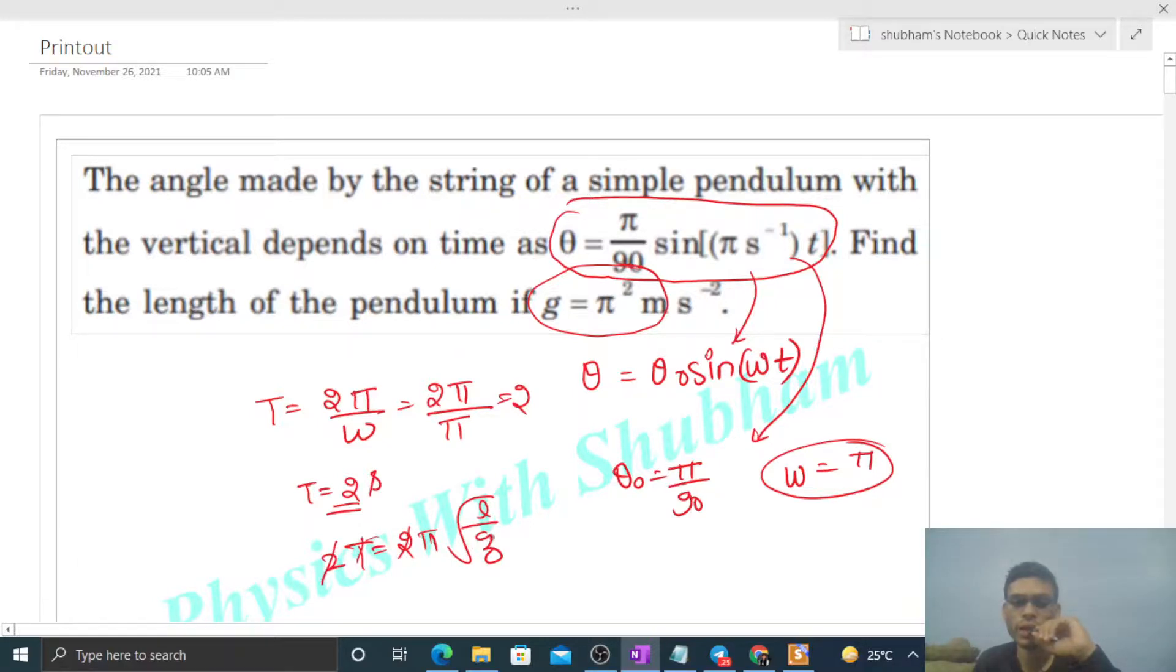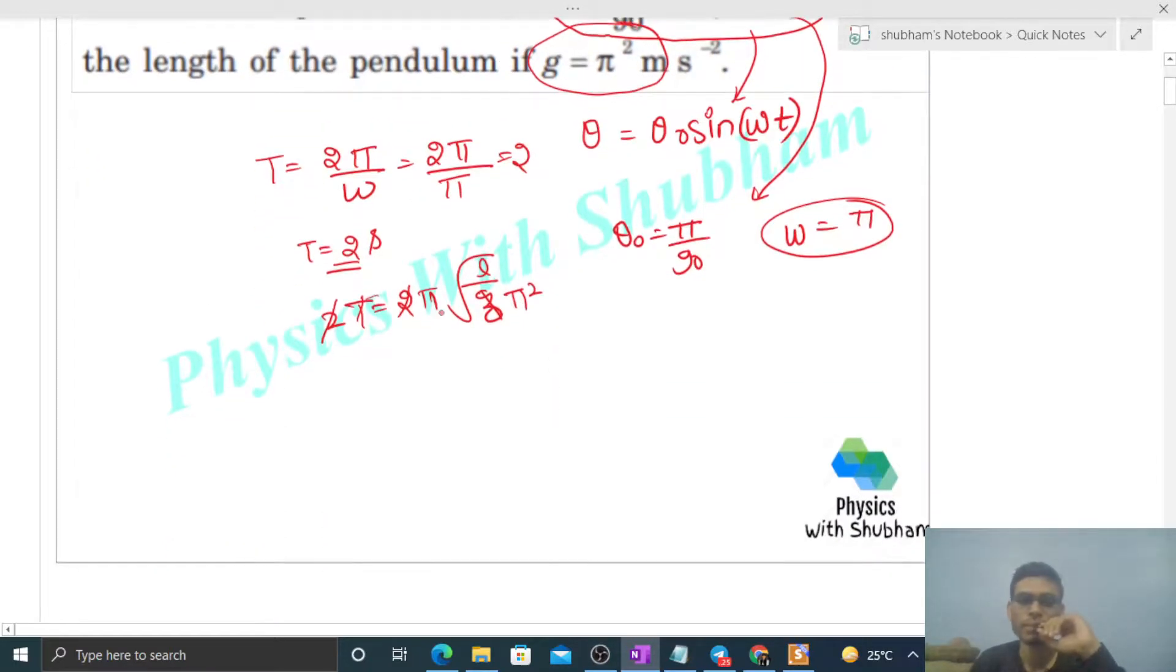G's value is pi squared. When we take the square root, that becomes pi, so pi cancels with pi. This equals the square root of l, so l will be 1 meter.